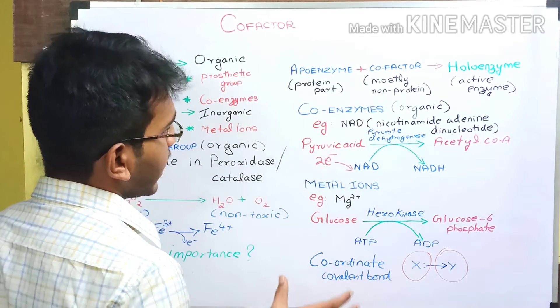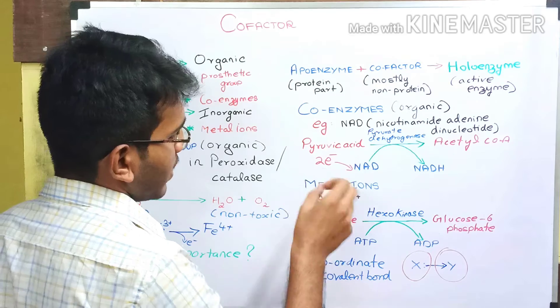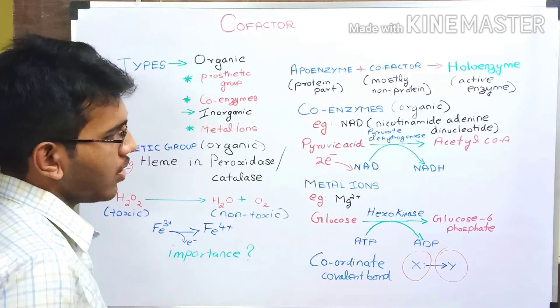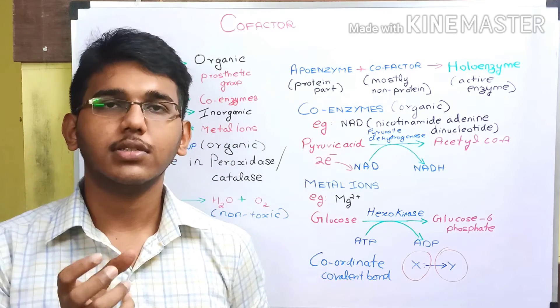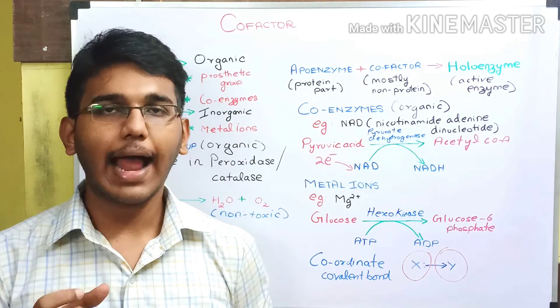Now let us discuss about the inorganic cofactors, that is the metal ions. Here we have the example of Mg2+. Before discussing about the example, we must know how the metal ions, that is the inorganic cofactors, act.